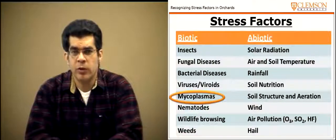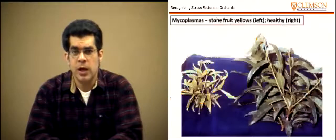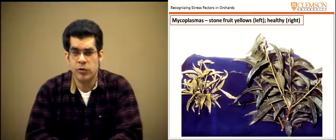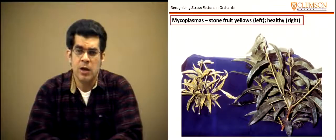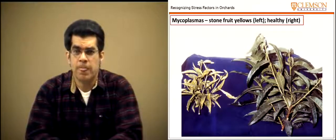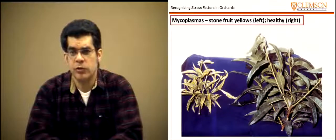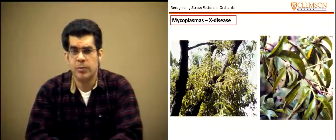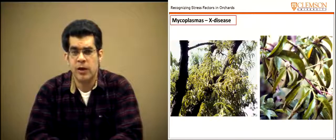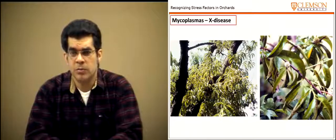Mycoplasmas are also a biotic stress factor in peach orchards. Most common would be stone fruit yellows, typically observed in European orchards. There is also a mycoplasma called X-disease sometimes observed in the northern United States, which can affect foliage and the development of fruit and is a problematic disease.